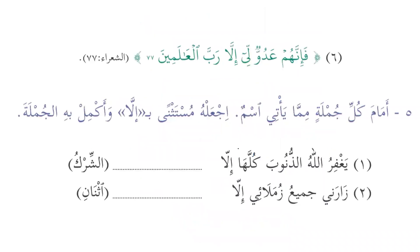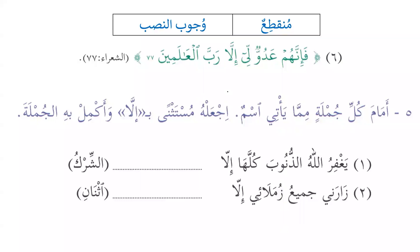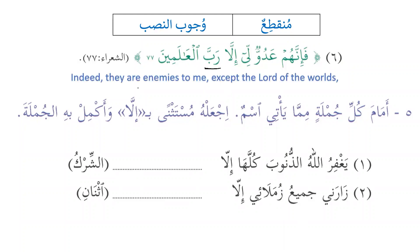'Fa-innahum aduwwun li illa rabbal alameen' — indeed they are enemies to me except the Lord of the worlds. This is munqatiyun — excellent! When it is munqatiyun it has to be mansoob — wajib al-nasb. So 'rabbal alameen': 'rabb' is mansoob and is mudaf, and 'al-alameen' is mudaf ilayh. So alhamdulillah we are able to understand these verses and analyze the use of illa.